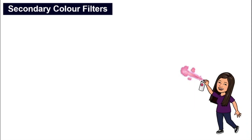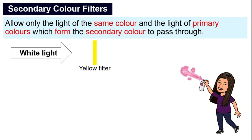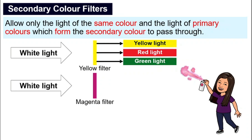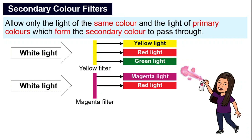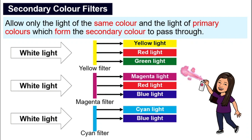How about secondary color filters? They allow the light of the same color and also the two primary colors that form the secondary color to pass through. For example, a yellow filter directed with white light will allow yellow light, red light, and green light to pass through. A magenta filter will allow magenta, red, and blue light. And a cyan filter will allow cyan, blue, and green light. So these are our secondary color filters.